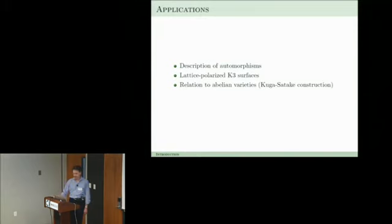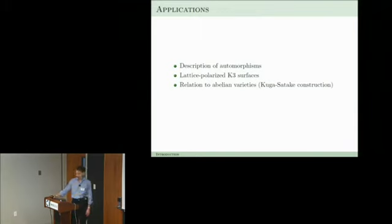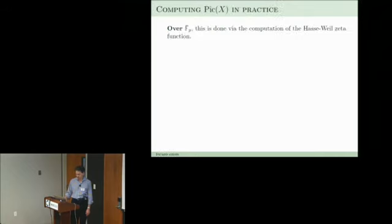You use Torelli to understand automorphisms. There is also an extension of this theory: from one polarization you can look at lattice-polarized K3s, which is also important. These periods allow you to relate K3s to abelian varieties of very high dimension via the Kuga-Satake construction, which is useful because the geometry of abelian varieties is better understood, though the price is that the dimension of that Kuga-Satake abelian variety is quite large.